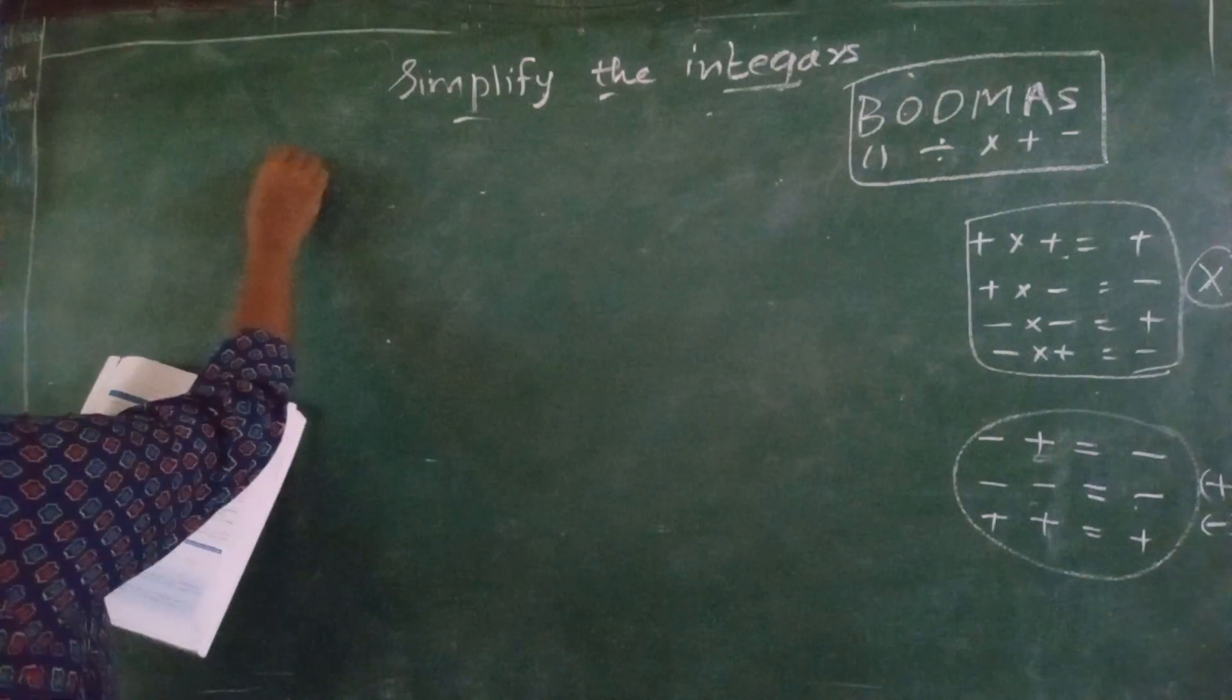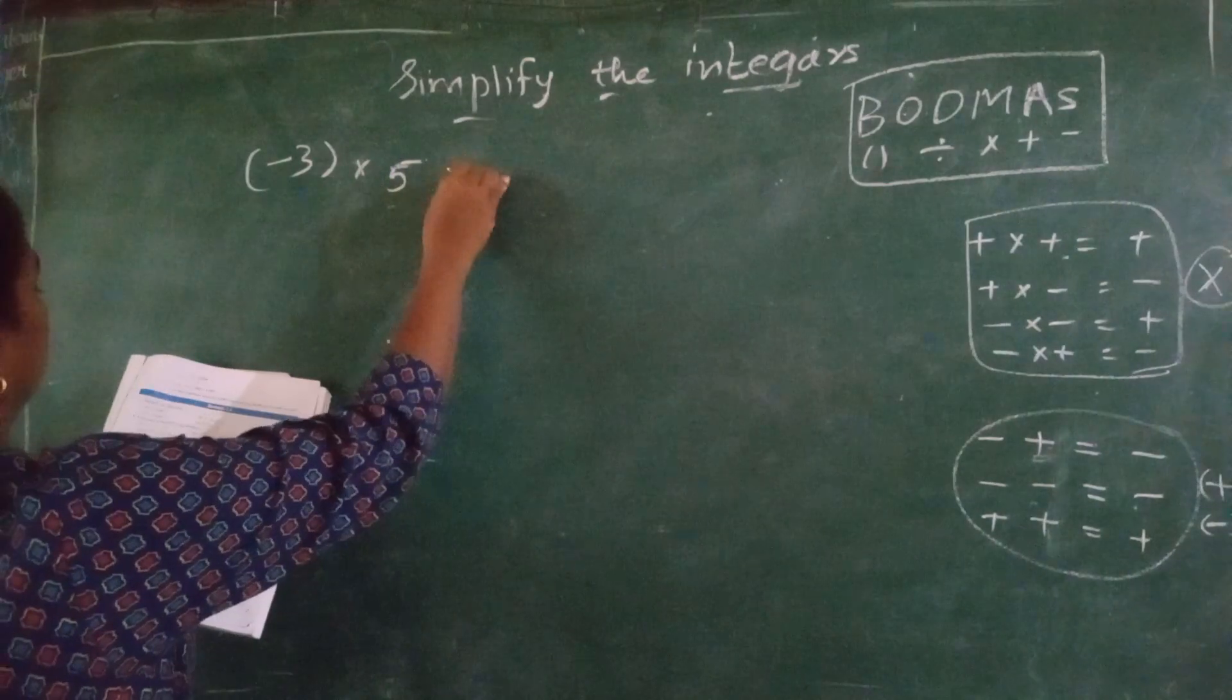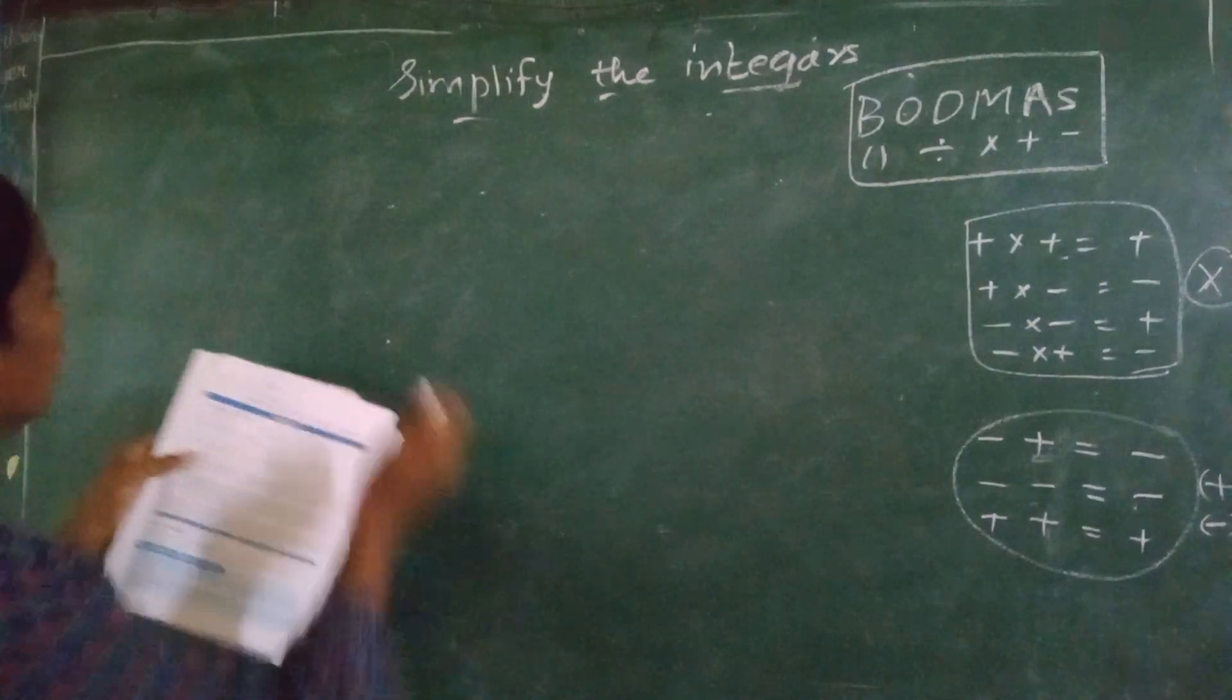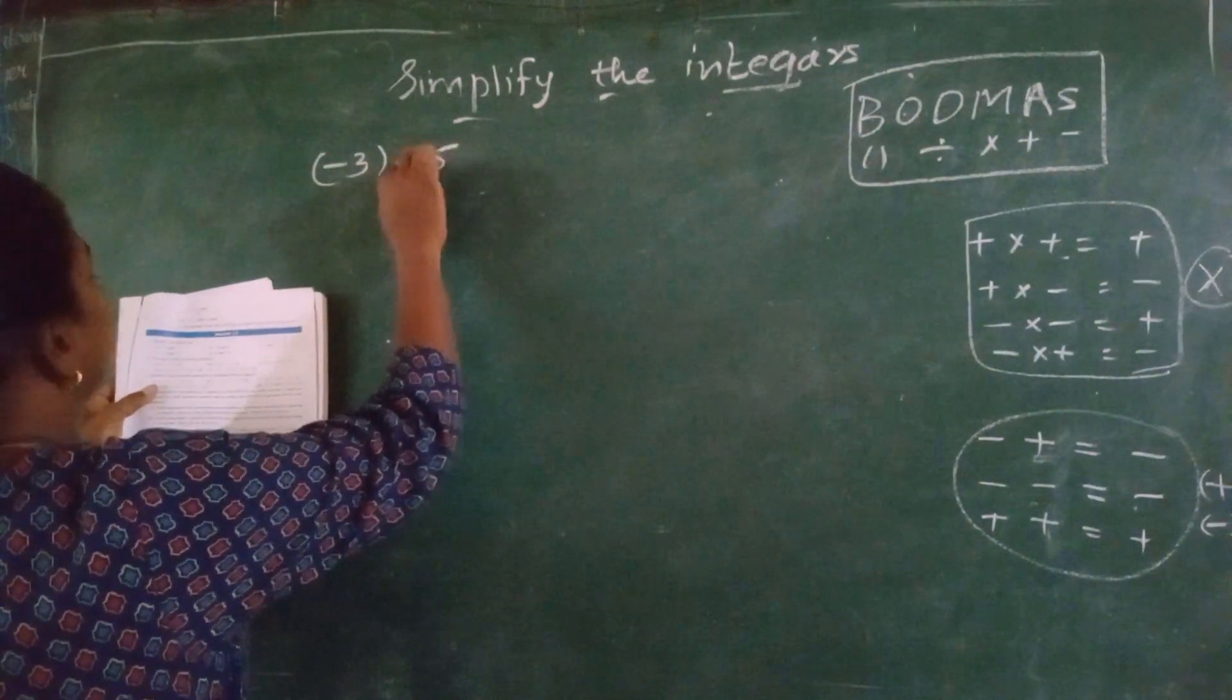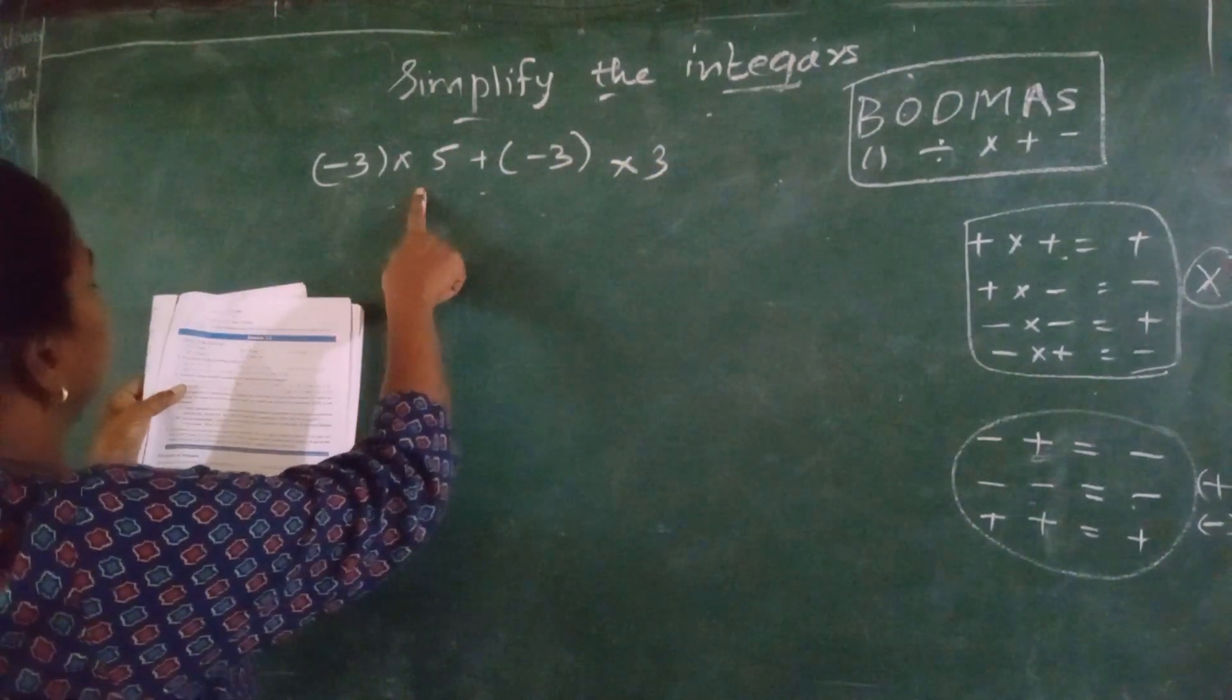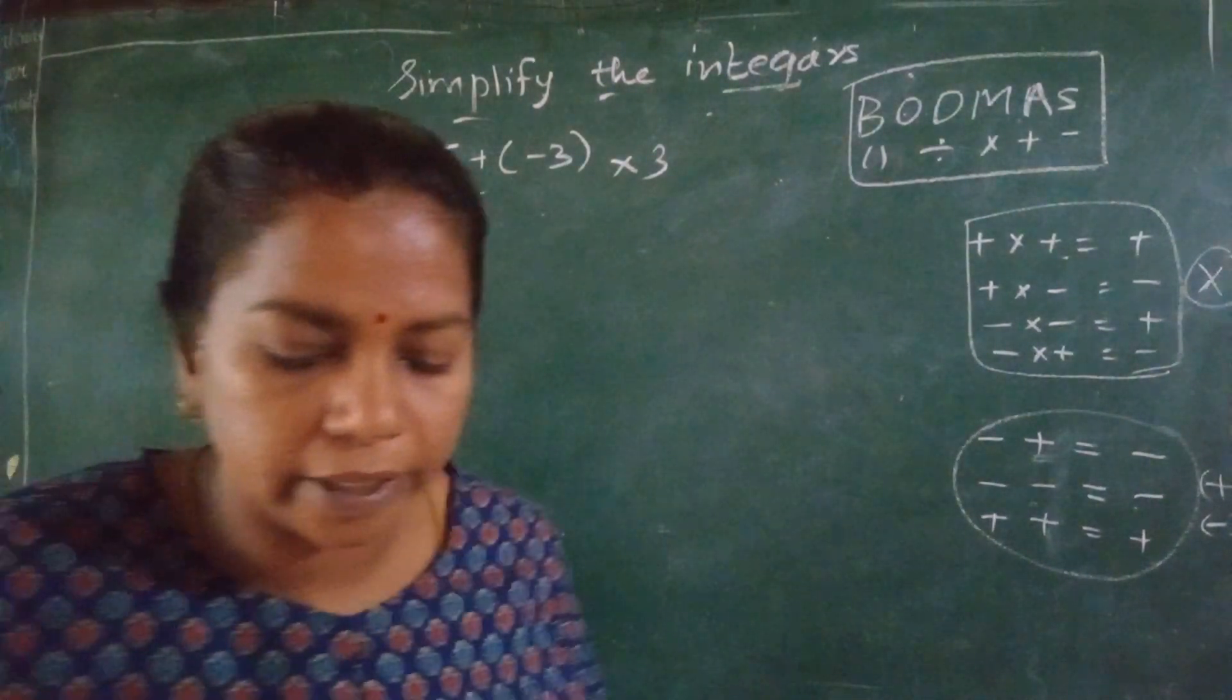First one is, minus 3 into 5. Let me write it clearly. Minus 3 into 5 plus minus 3 into 3. This is the question.